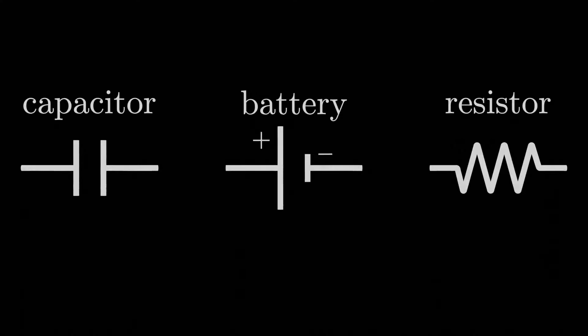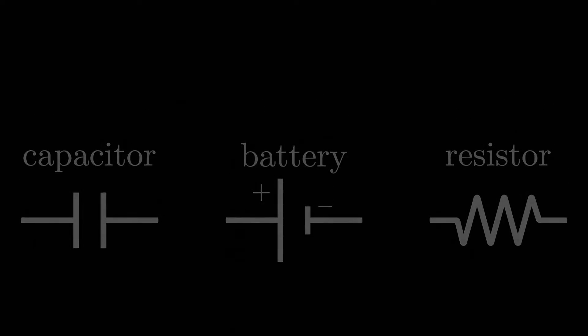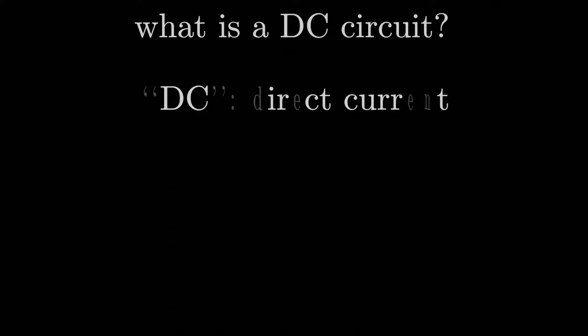We still have to figure out how to deal with multiple resistors, but even before that we haven't actually said anything about DC circuits in particular. What is a DC circuit? DC just stands for direct current. In a DC circuit, the current is only traveling in a single direction at some point in the circuit.